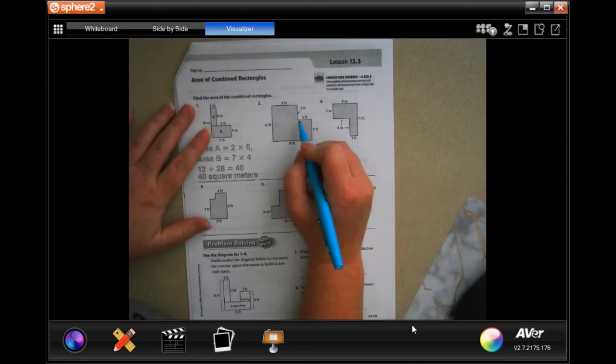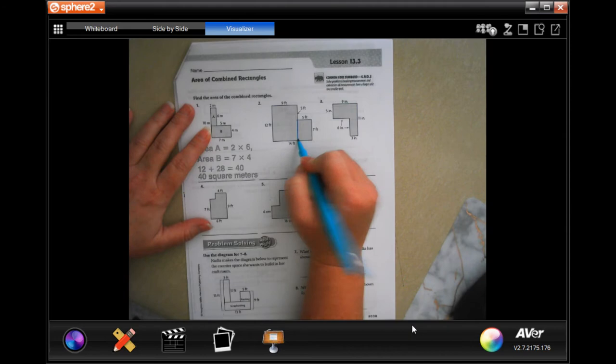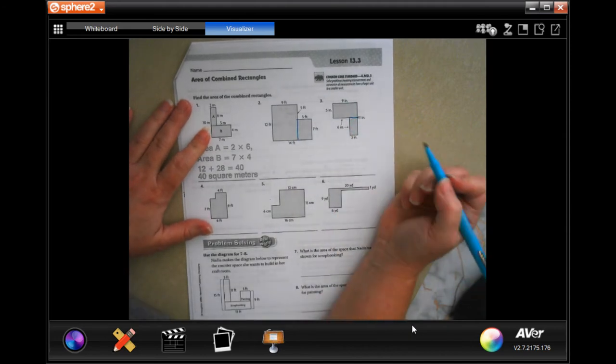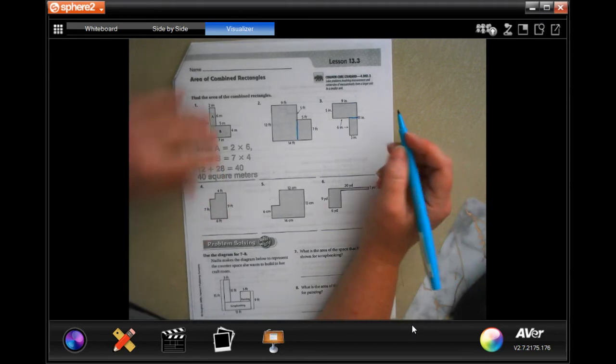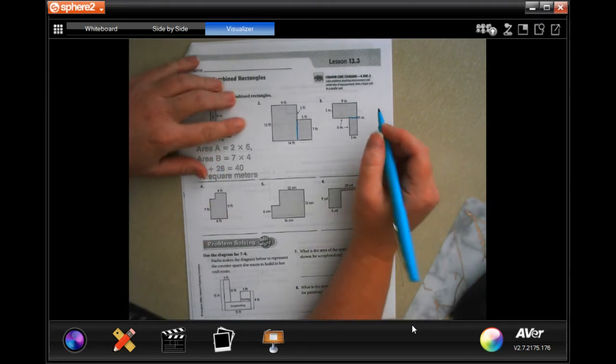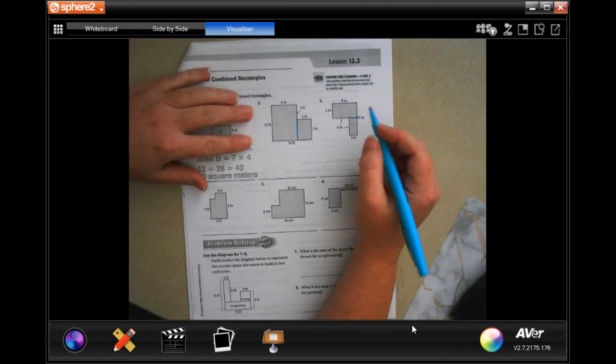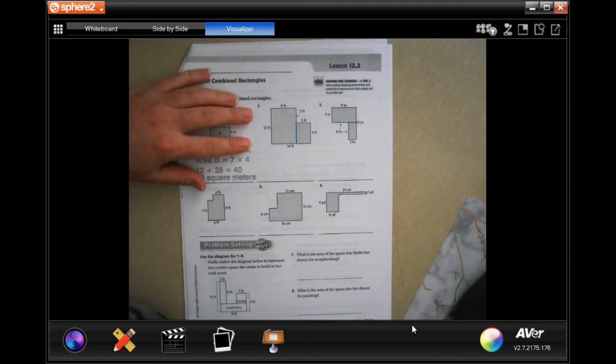So what we're doing is taking them and making them into shapes that we know. Now we have just two rectangles. We can do this two ways.